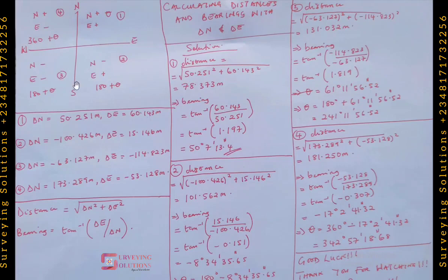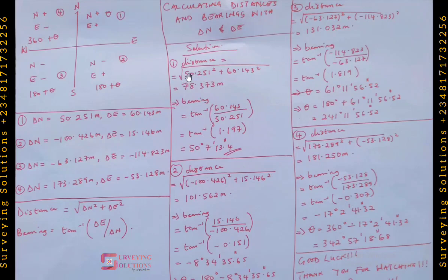Now get your calculators — we have four examples, one for each quadrant condition. In the first example, both delta northings and delta eastings are positive. Distance is the square root of delta northings squared plus delta eastings squared. So that's the square root of 50.251 squared plus 60.143 squared.